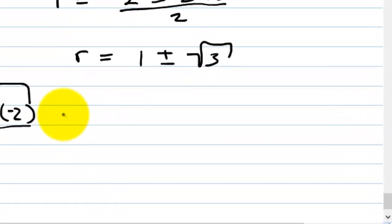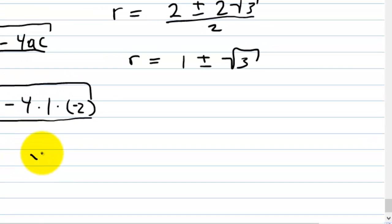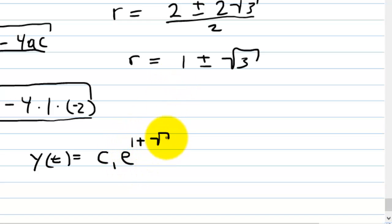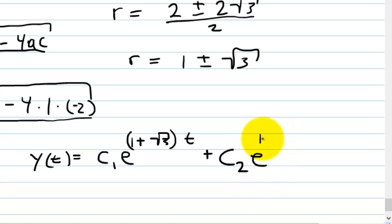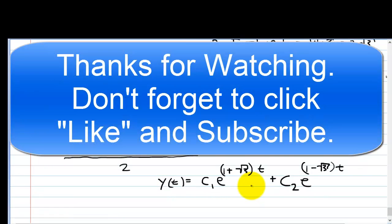So the general solution is y(t) equals c1 times e to the (1 plus root 3)t plus c2 times e to the (1 minus root 3)t. That is the general solution to this differential equation. In the next video we're going to be working with initial value problems, actually solving for c1 and c2. I hope you enjoyed this video — don't forget to click like and subscribe. Good luck in your classes and hopefully I'll see you in the next video.